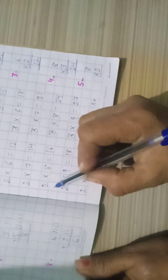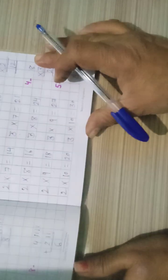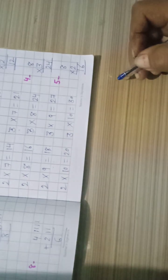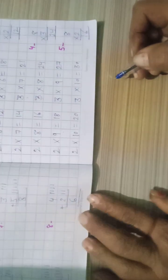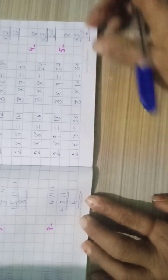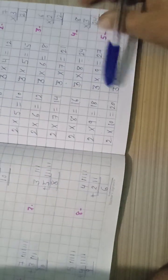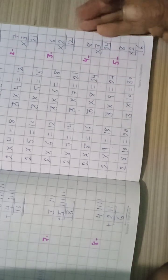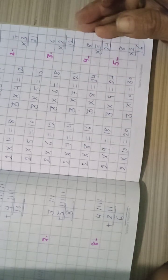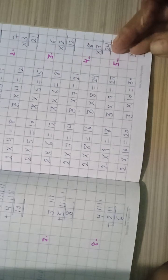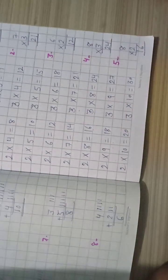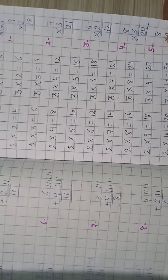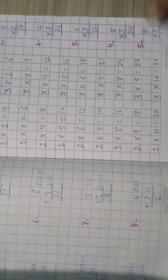Two, eight, sixteen. Two, eight, twenty-four. Three, eight, twenty-four.